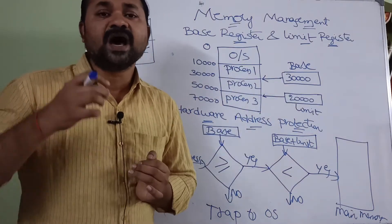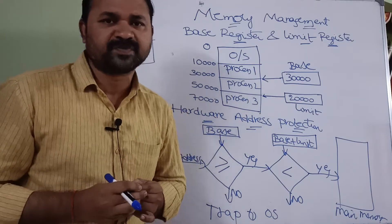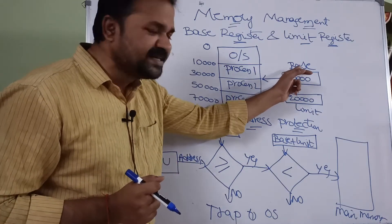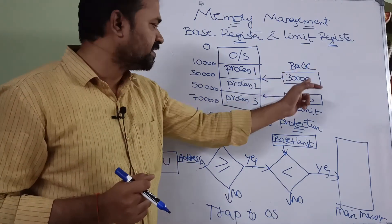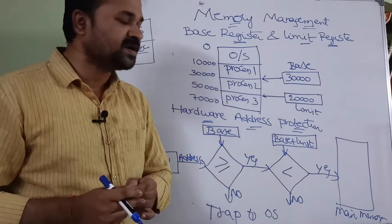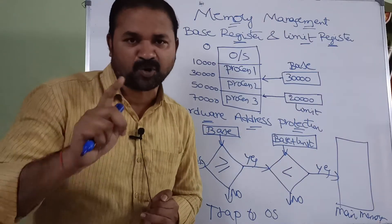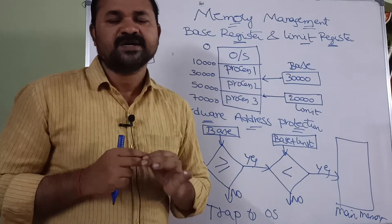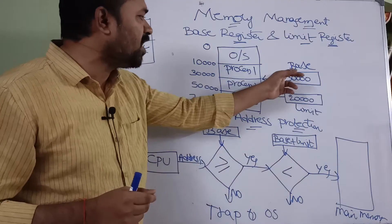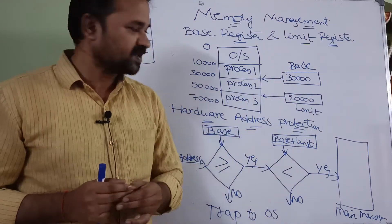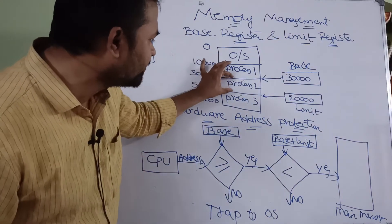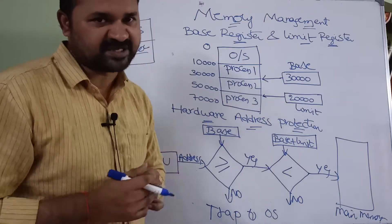In order to provide this protection, we use two registers — a base register and a limit register — per each process. So each process should have these two registers. Here we are focusing on the second process.